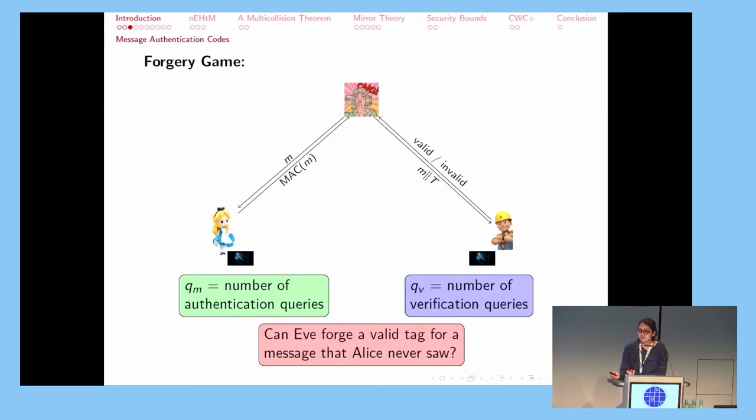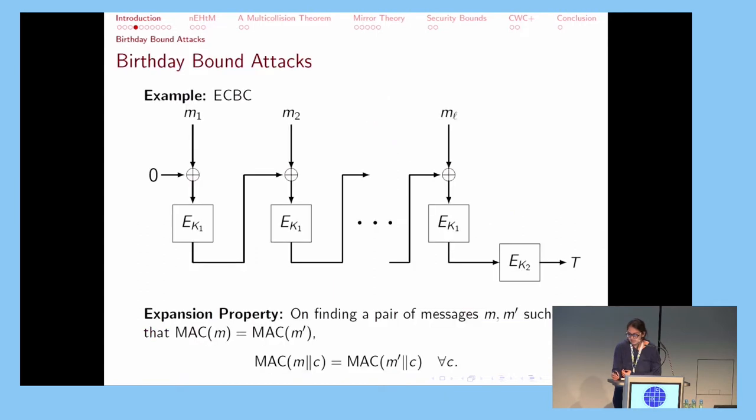In order to carry out a successful forgery, Eve will play a game with Alice and Bob. She will make QM authentication queries to Alice and get back the corresponding tags for each message. She will also make QV verification queries to Bob, and he will respond by telling her whether or not each message-tag pair is valid. If Eve can then make a new and valid message-tag pair that she sends to Bob, then Bob will not know that this message was tampered with and he will read it.